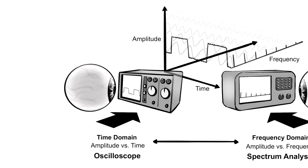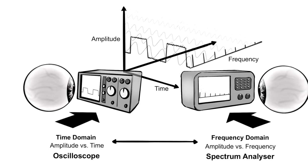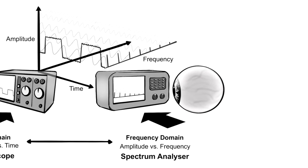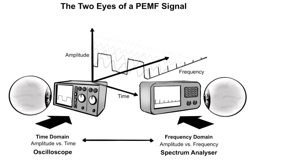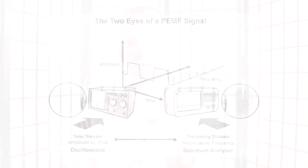I tell people you need to look at a signal with two eyes. One is the time domain, which is the eye of the oscilloscope — that's going to show you the shape of the signal. The other is the frequency domain, which is the eye of a spectrum analyzer — and that's going to show you the spectrum of frequencies that are used.